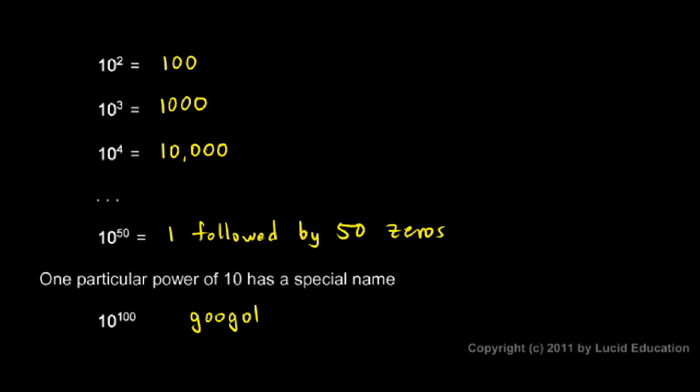Apparently, there was a mathematician who was thinking about this number, just because it's this nice big number, and it was just interesting to him. And he was thinking that a number like that ought to have a name. And so he asked his kid what he thought it should be named.